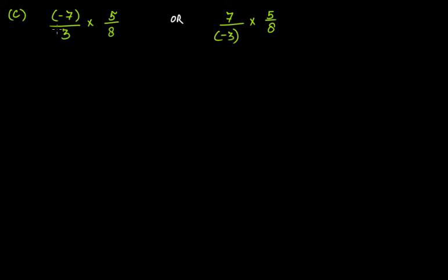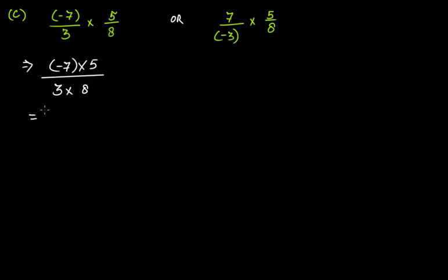Now let's move to this one. Here we have minus 7 over 3 times 5 over 8, and this is also written as 7 over minus 3 times 5 over 8 — the same discussion applies: you don't need to remove the negative sign from the denominator, you can simply keep it. So if you multiply, minus 7 times 5 gives the numerators together and 3 times 8 gives the denominators together, and you get minus 35 over 24.